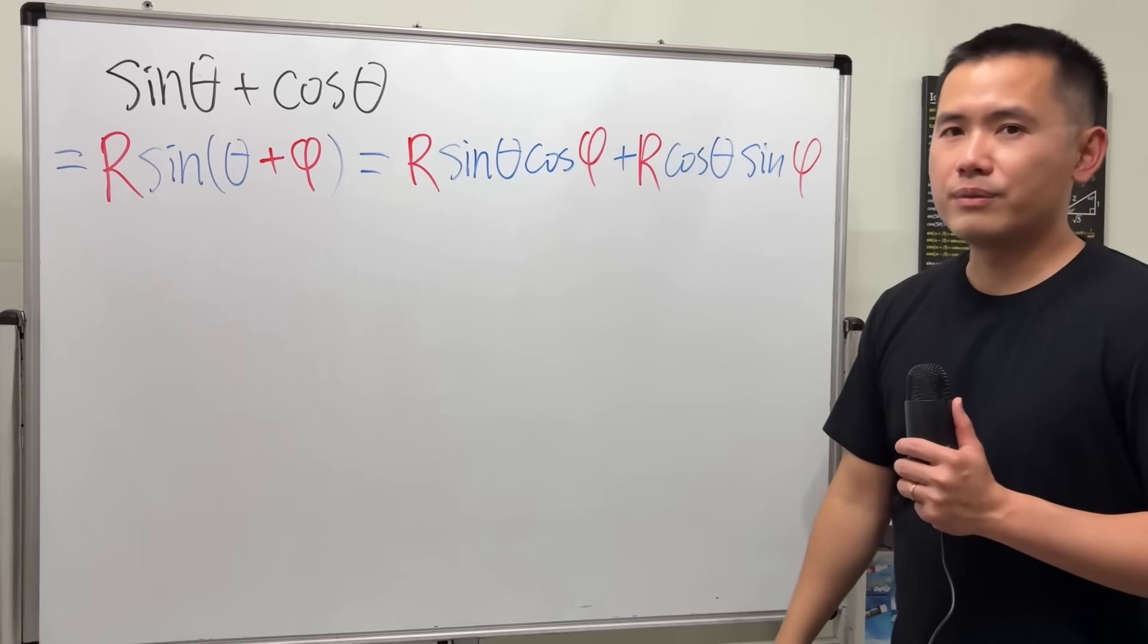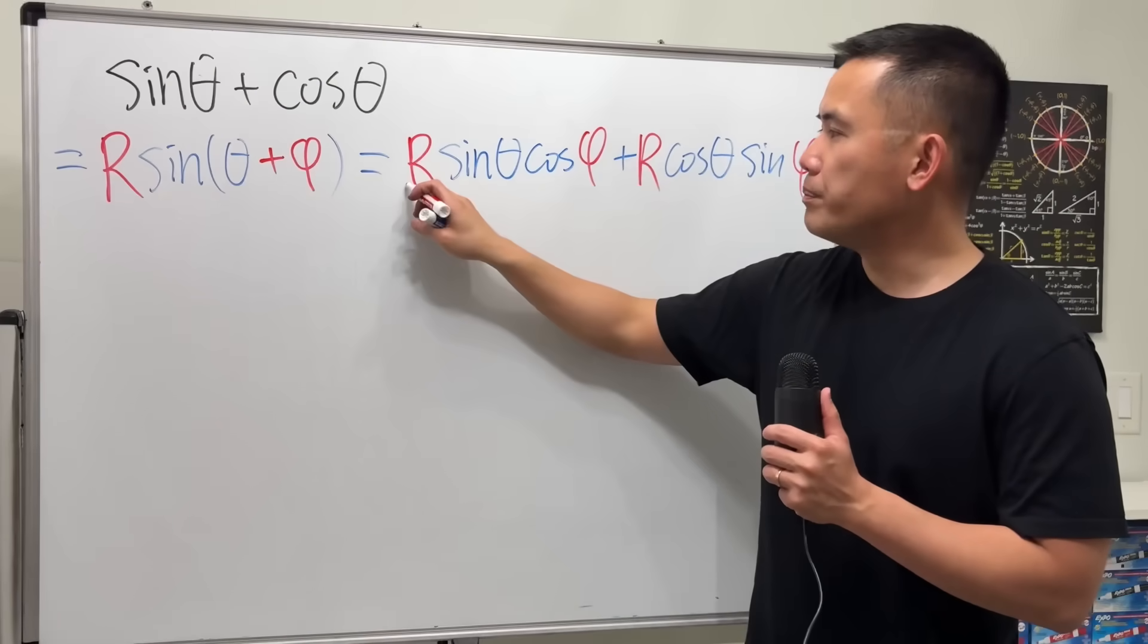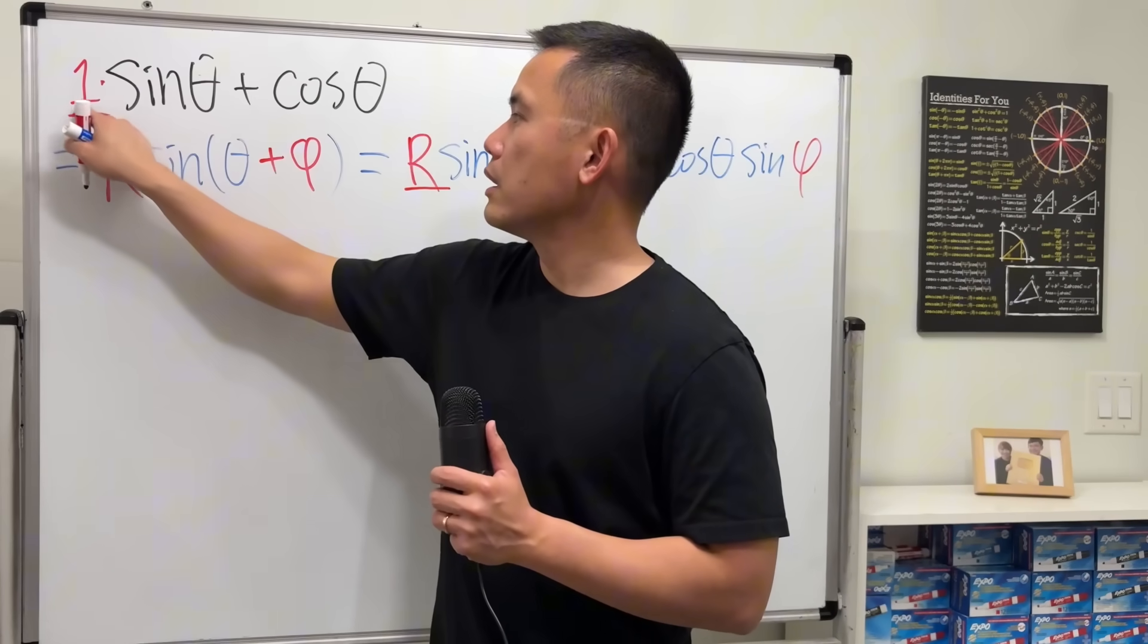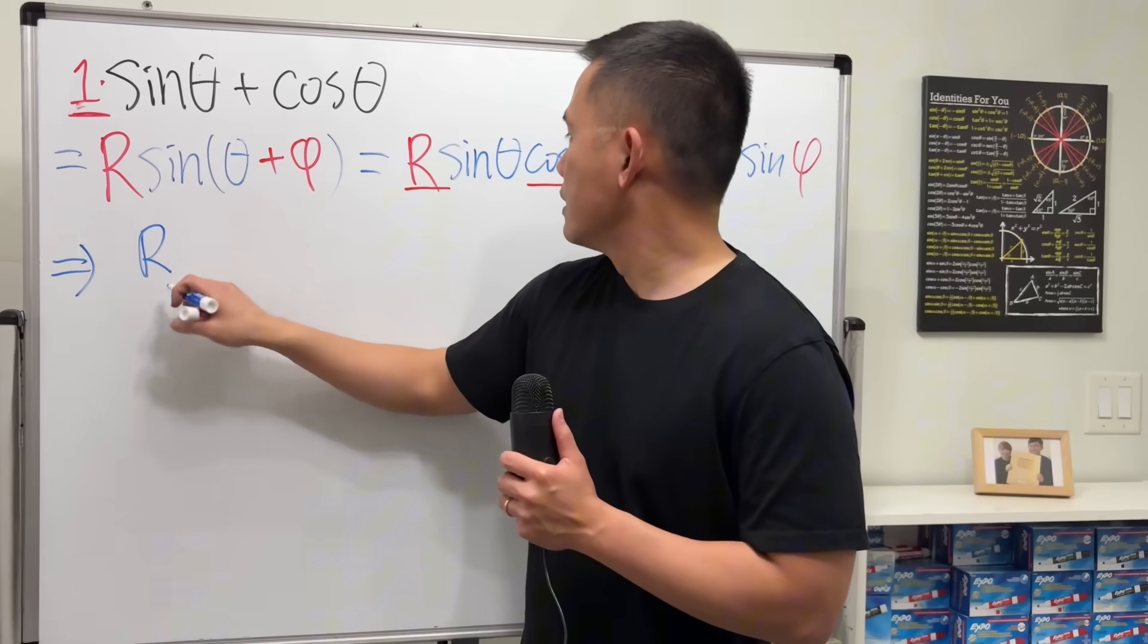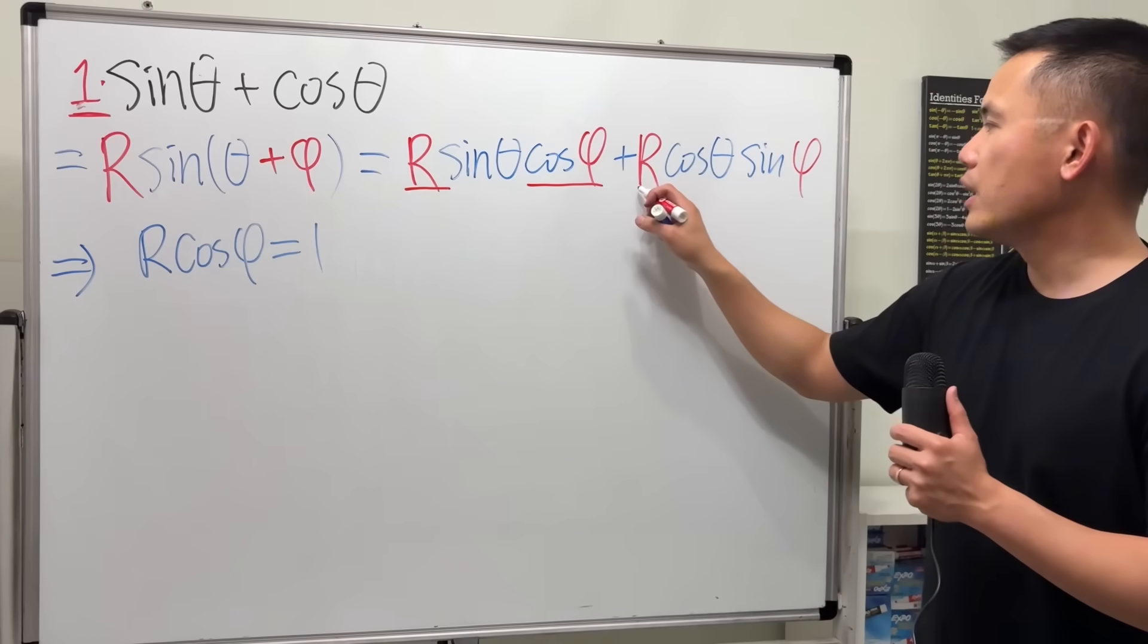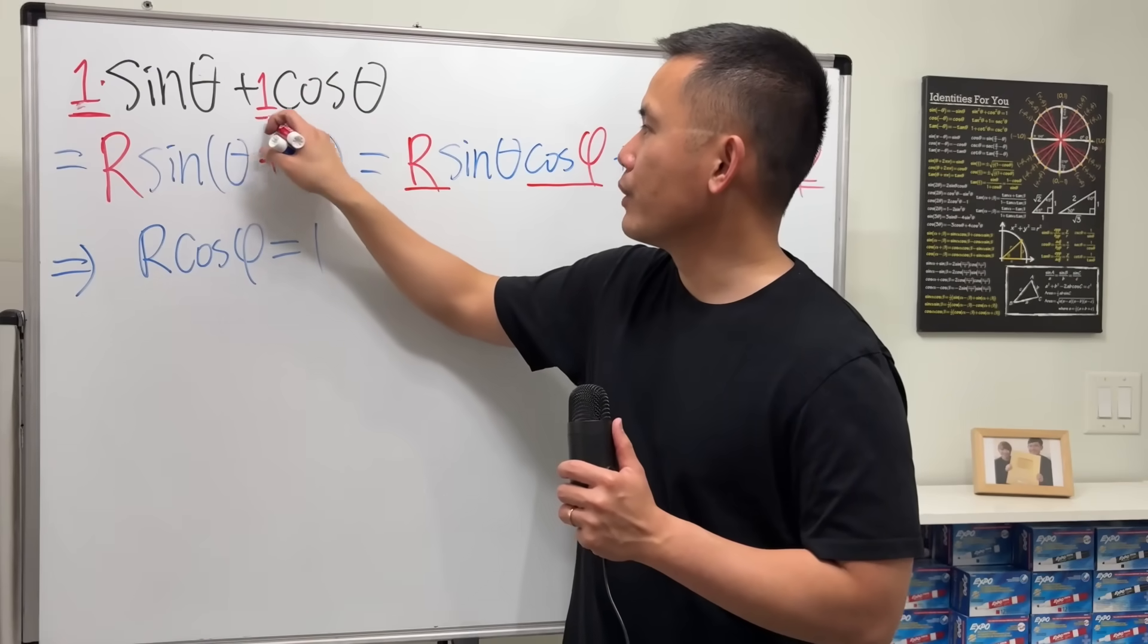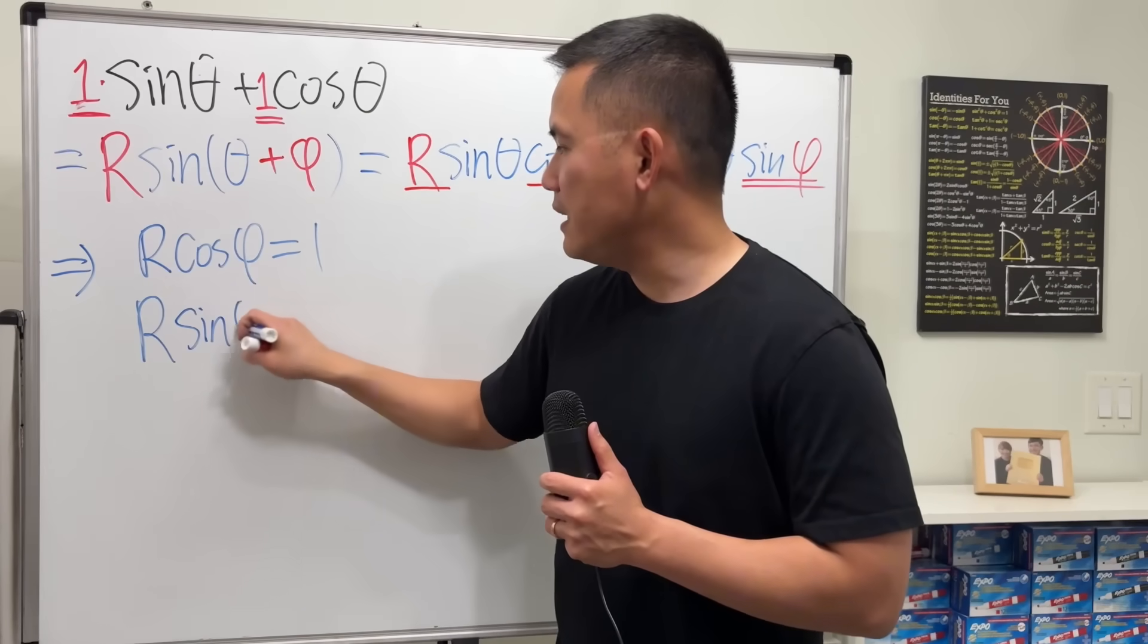Now why do we do that though? Because the first part has sine theta right here, so that means we better have R times cosine phi to be this coefficient, which is just equal to one. So that's our first condition: we must have R times cosine phi to be one. Now secondly, we do the same thing here. We have R times sine phi—that must be the coefficient for cosine theta, and that's going to be one right here as well. So we have another condition that R times sine phi has to be one.